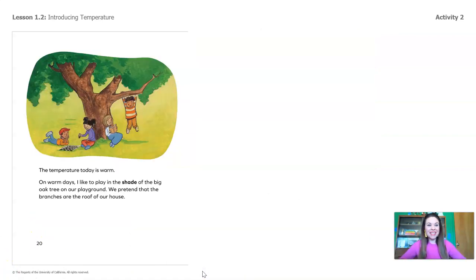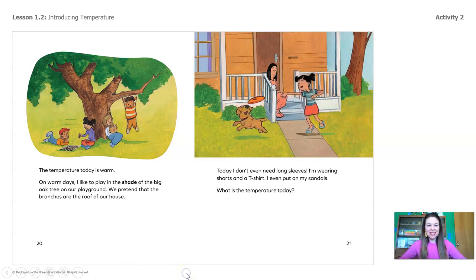The temperature today is warm. Was your prediction correct? Great. On warm days, I like to play in the shade of the big oak tree on our playground. We pretend that the branches are the roof of our house. All right. Let's try the next day.